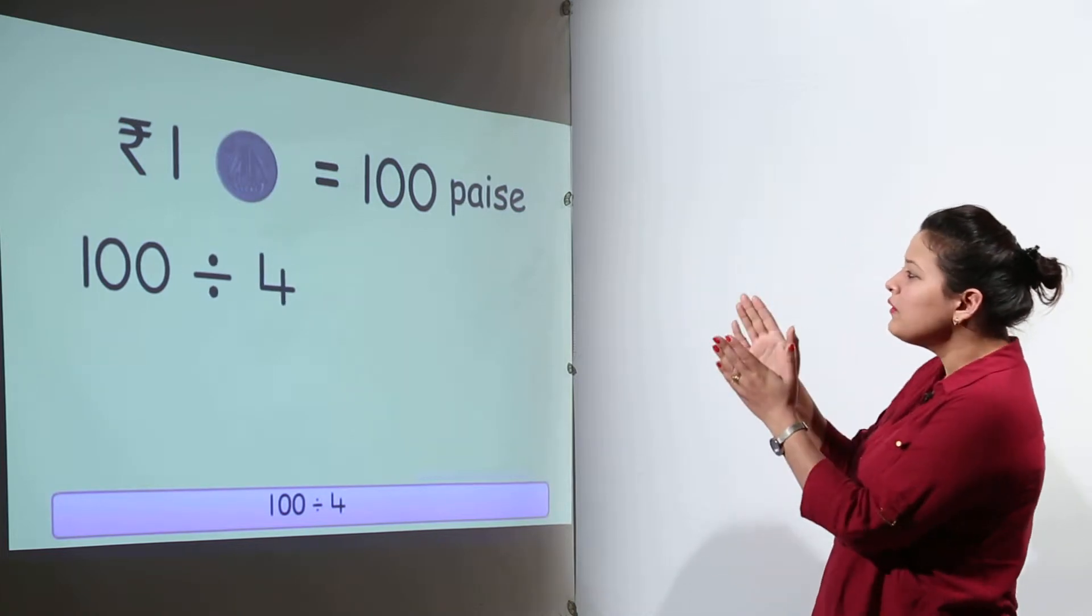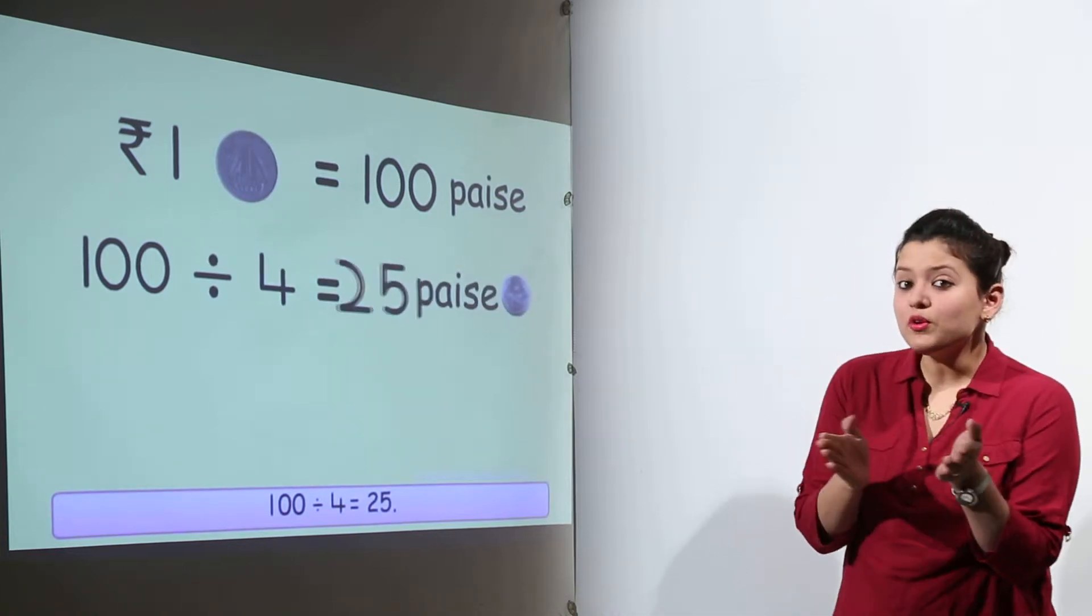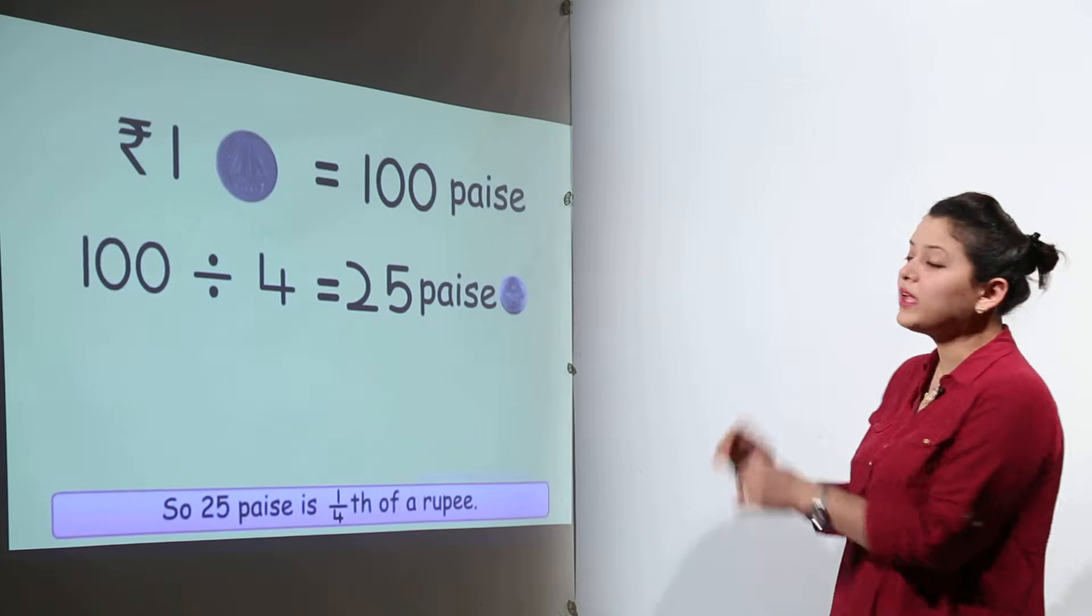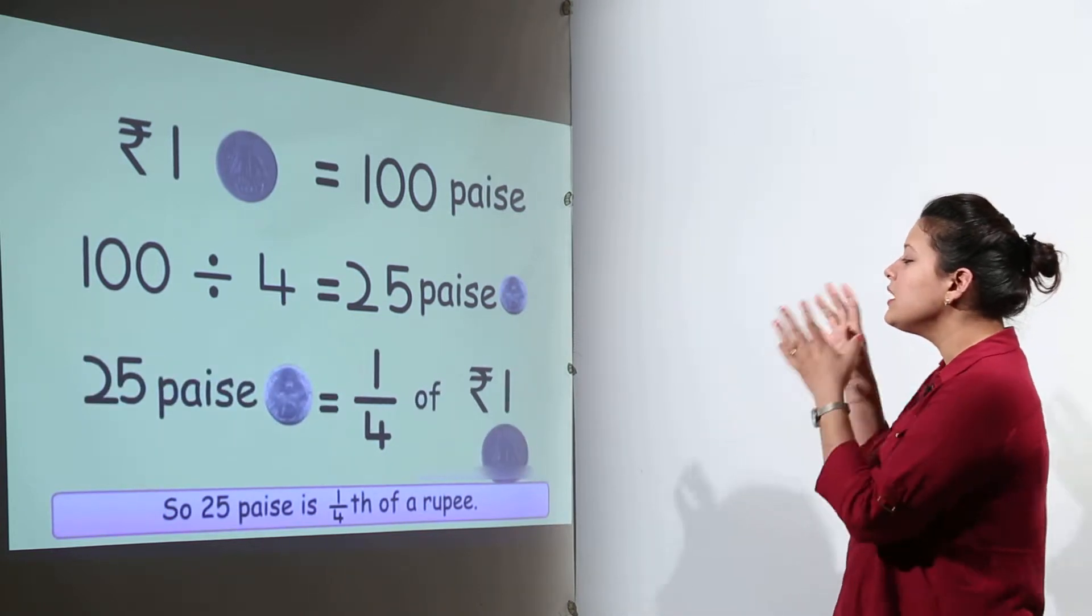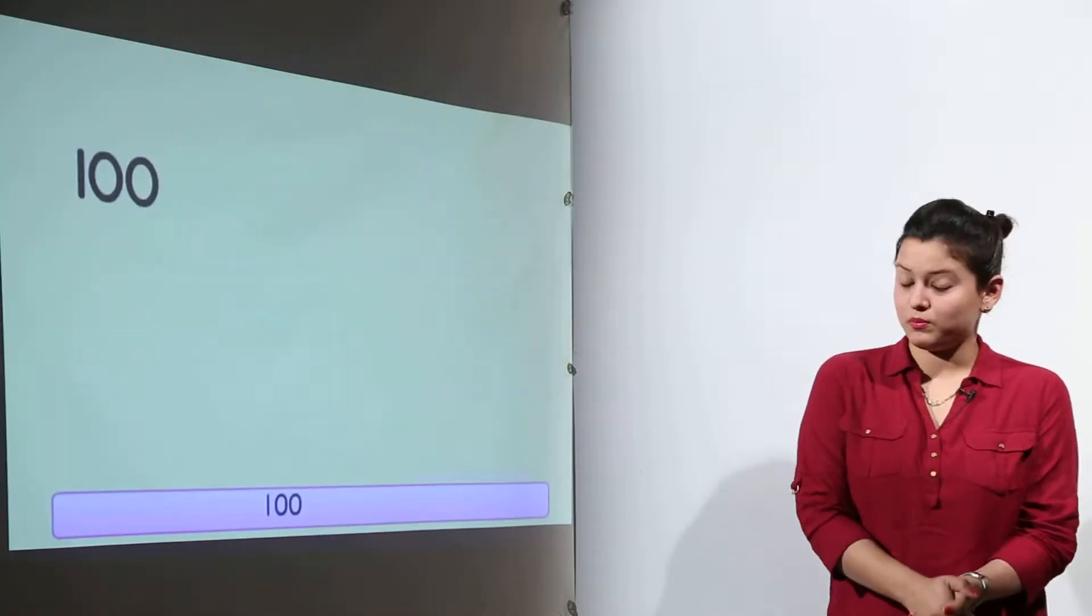Let us do it. Now here 1 rupee has 100 paisa. If you divide 100 with 4, you get 25 paisa. Now 25 paisa is actually one-fourth of a rupee, that is quarter of a rupee.